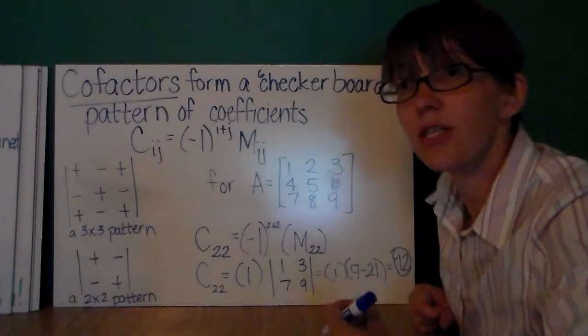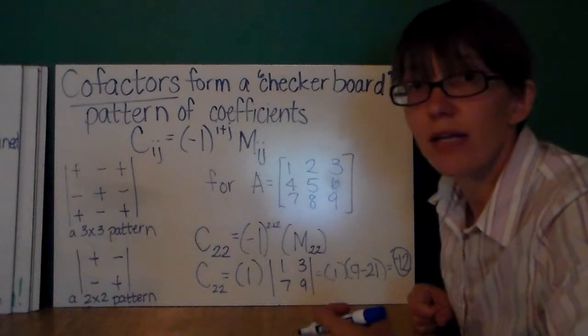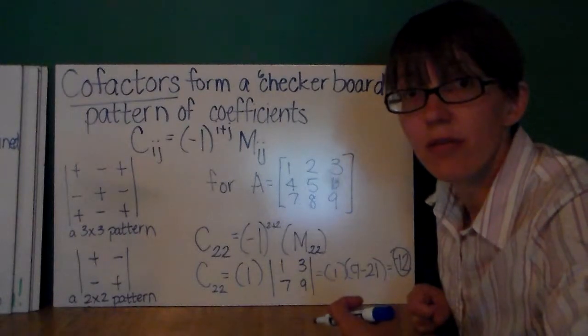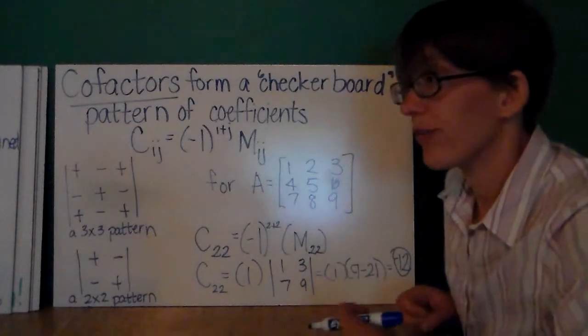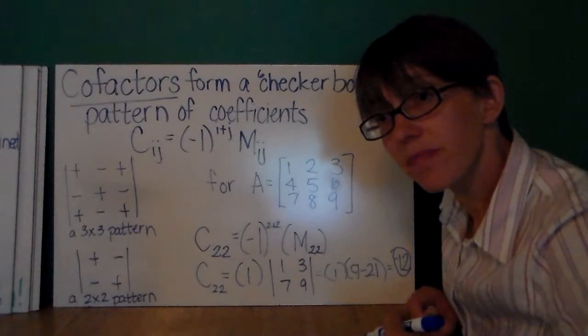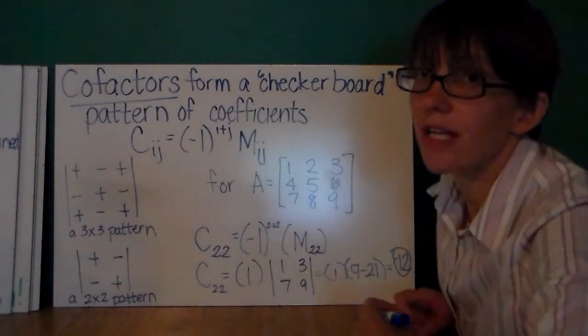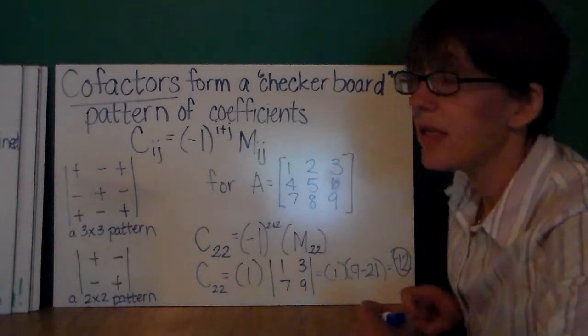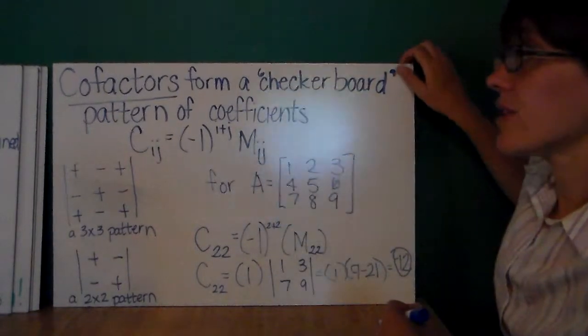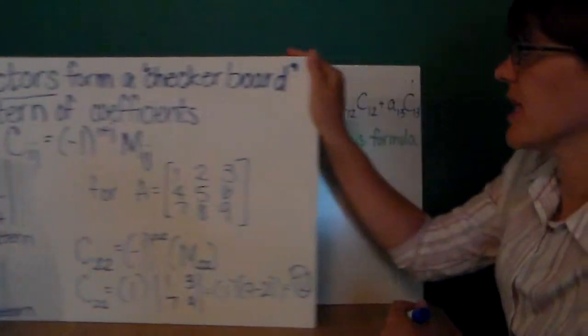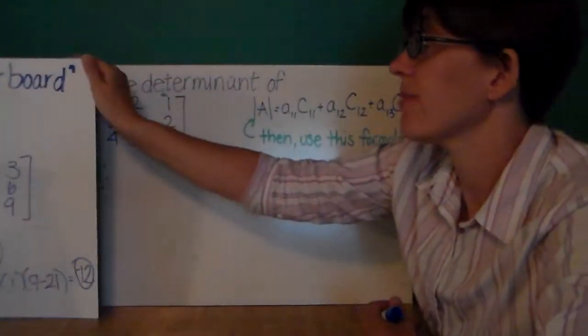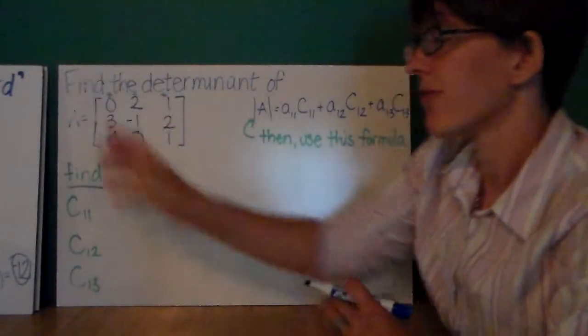Now, a couple of your problems will ask you to find the minors and cofactors for matrices. If you want to find, I suggest first you find the minors, then you use the minors along with the pattern to find the cofactors. Now, if I wanted to use these to find a determinant, and we're just going to stick with 3 by 3 matrices for this problem. Here's my matrix A.